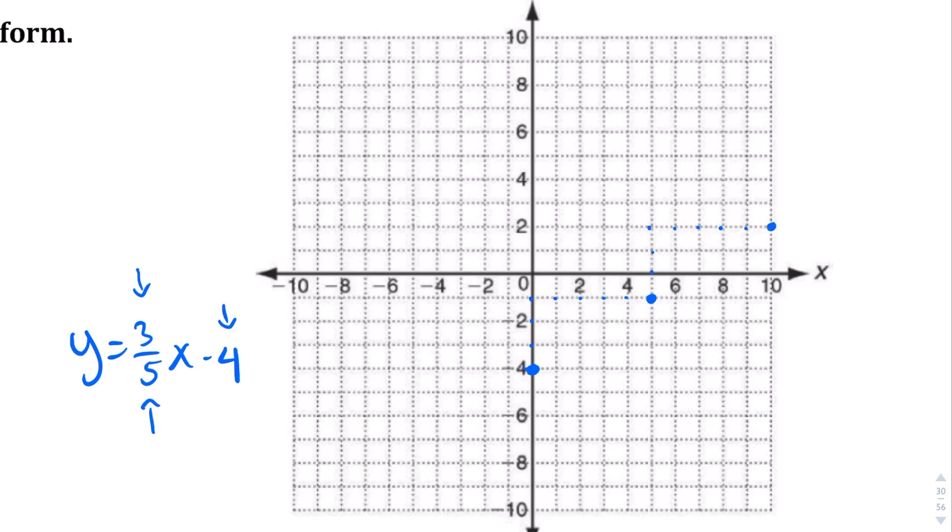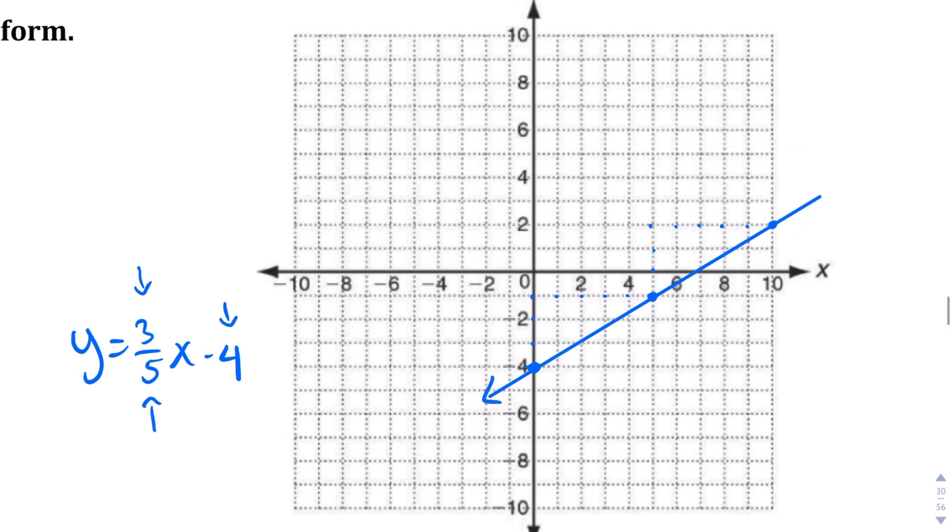If we draw a line basically through those points, and I'm going to extend it a little bit, this is basically what our line is going to look like. This is a line of that graph, where that's our y-intercept, 0, negative 4. We're going to go up 3 units and to the right 5 units.